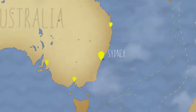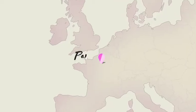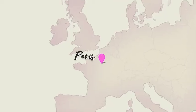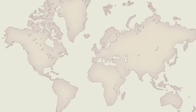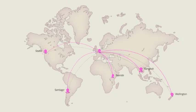New York, Sydney, or Paris. With six detailed continents and a map of the world, you can show where you are headed and keep your viewers informed every step of the way.